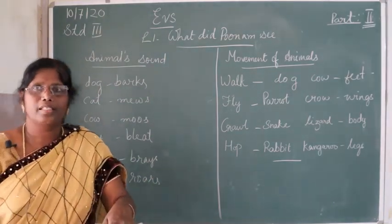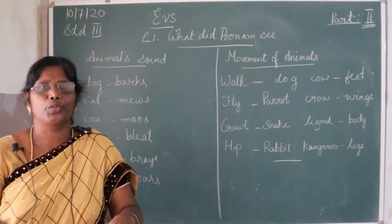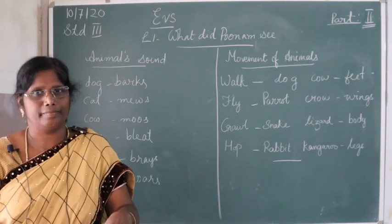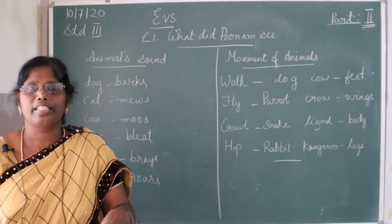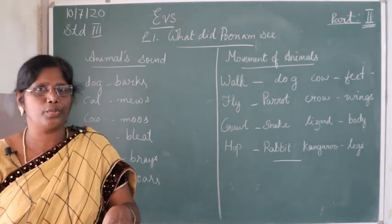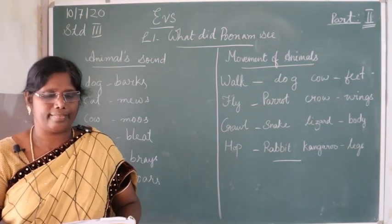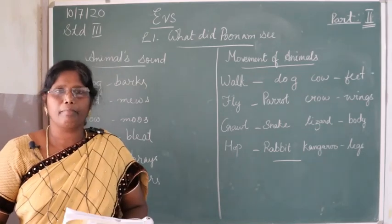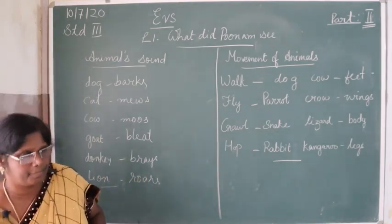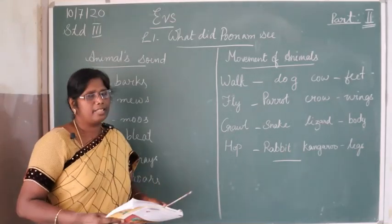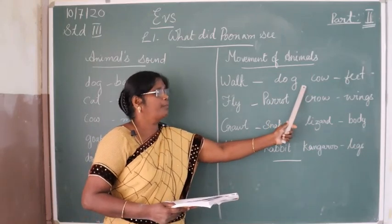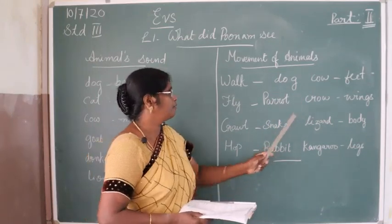Now, animals move from one place to another, and their movement is also different. They use different body parts to move from one place to another. For example, some animals walk — like dog and cow. They use their feet.